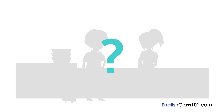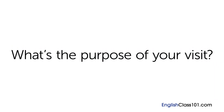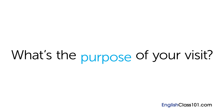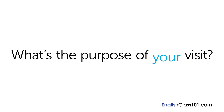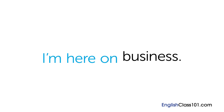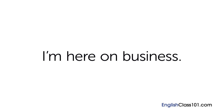Do you remember the third question the immigration officer asked in the scene? 'What's the purpose of your visit?' The immigration officer asks this to understand why Gustavo is visiting. 'What's' is a contraction of 'what' and 'is,' followed by 'the purpose of your visit.' Together: 'What's the purpose of your visit?' In response, Gustavo answers: 'I'm here on business.' This starts with the core phrase 'I'm here on,' followed by the word 'business.' All together: 'I'm here on business.'